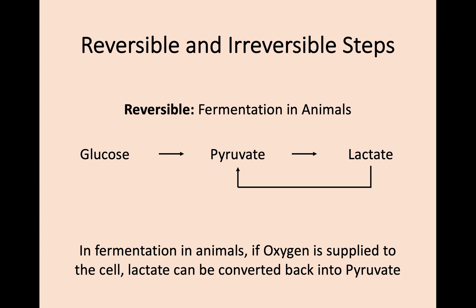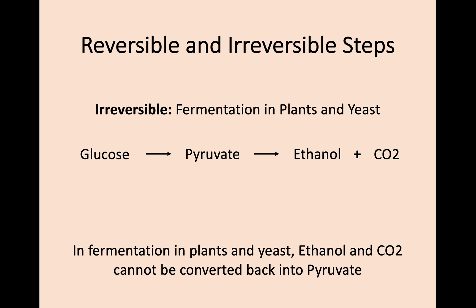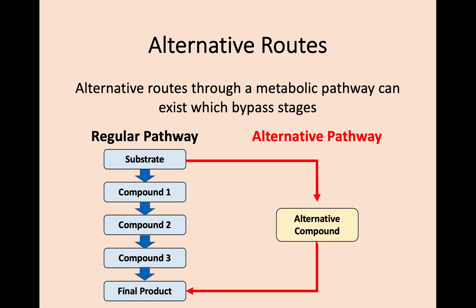However, if we consider fermentation in plants, where pyruvate is broken down into ethanol and carbon dioxide, even if oxygen does become available again, the end products cannot be converted back to pyruvate — so this would be an example of an irreversible reaction. Finally, there are alternative routes or alternative pathways. A regular pathway may have several stages of enzyme-controlled reactions to get to the final product, but there may be a situation where you can skip these stages by using an alternative pathway to get to the same final product.